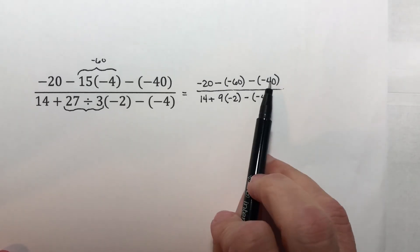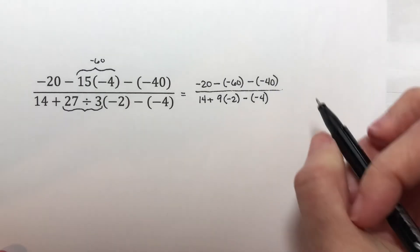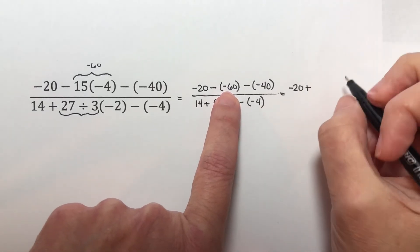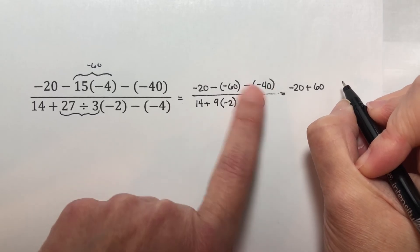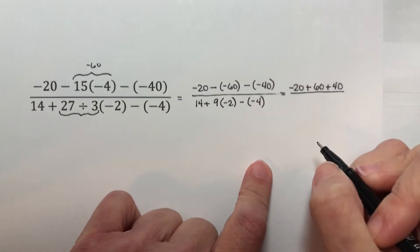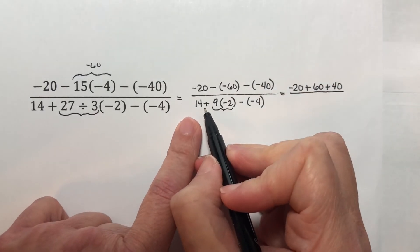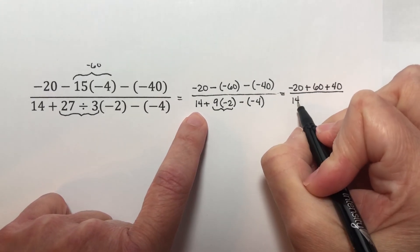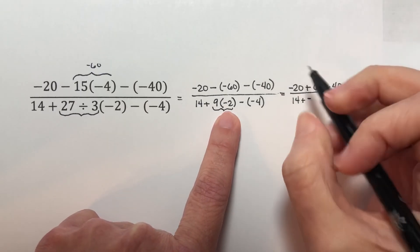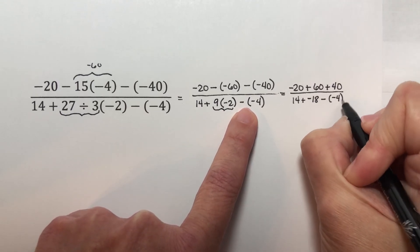Back to the top problem: I don't have any more multiplications or divisions, all I have left are subtraction problems. I'm going to change these to plus the opposite. So this is negative 20 plus the opposite of negative 60, which is positive 60, plus the opposite of negative 40, which is positive 40. For the bottom, I still have a multiplication right here to do before I can do addition or subtraction. I have 14 plus 9 times negative 2 — they have opposite signs, so it's going to be negative 18 — giving me 14 plus negative 18 minus negative 4.